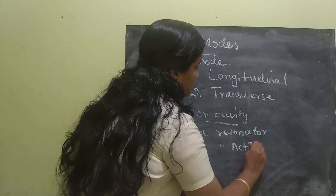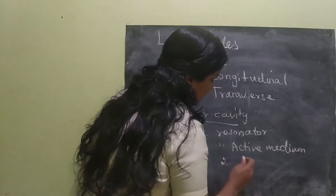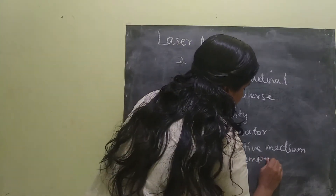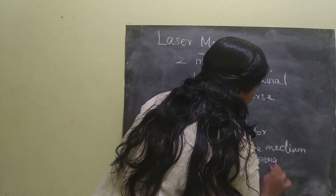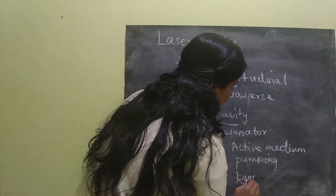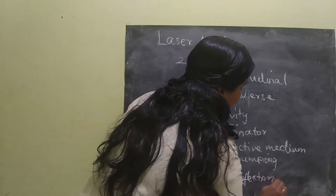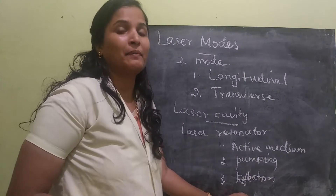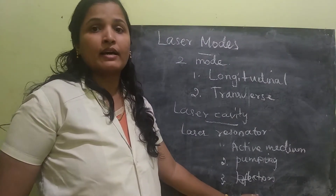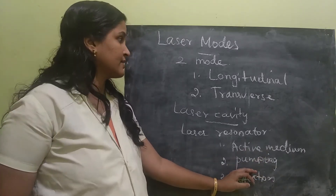The resonator contains three elements: one is active medium, second is pumping system, and third one is reflectors. Reflectors are called as mirrors — they may be totally reflecting or partially reflecting. We will study that in detail in later classes.